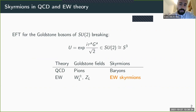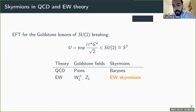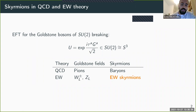Skyrmions are a kind of topological soliton that appears in some EFTs. In the context of high energy physics, these are EFTs for some broken symmetry — roughly speaking, some SU(2) symmetry that is broken. Originally they were found in an effective field theory for pions.